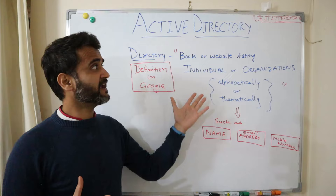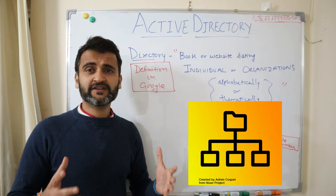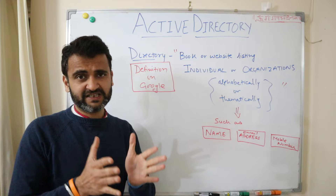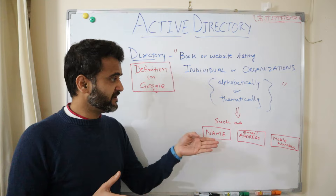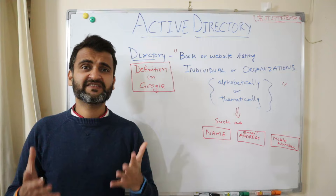Google defines a directory as a book or website listing individuals or organizations in alphabetical or thematic sequence. That means a directory is a place where you put your resources and sequence them in a specific way. You might have a list of people organized with their name, email address, and mobile number organized in a particular way. That is the basic definition of directory.